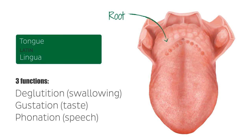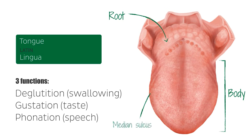The tongue consists of a root, which is the posterior third of the tongue, and a body, which is the anterior two thirds. The dorsum of the tongue is divided into two halves by the median sulcus, which is located on the body of the tongue.